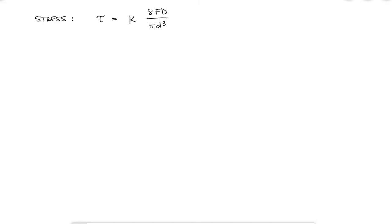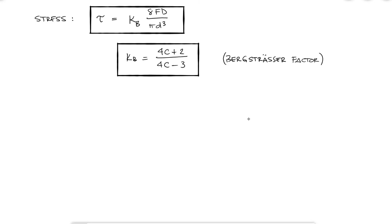There are several correction factors to choose from, but since the difference between them are in the order of 1%, we'll use the kb factor 4c plus 2 over 4c minus 3. We will see that this stress is not directly compared to the yield strength, but to the torsional yield strength. Presets are often used in springs, which means that the spring is purposely deformed past its yield point to maintain a permanent deformation that will counter the operation loads, but more on that later.